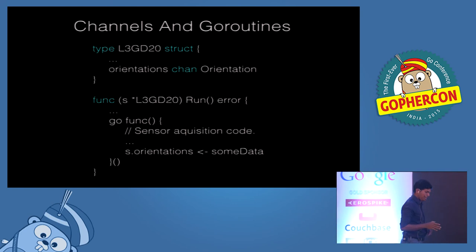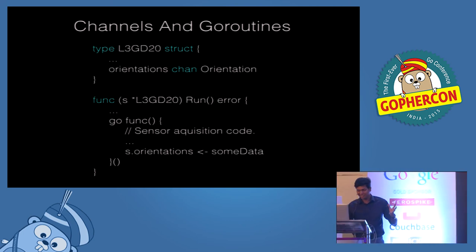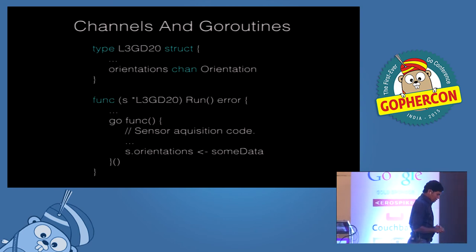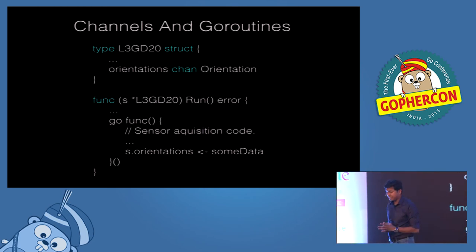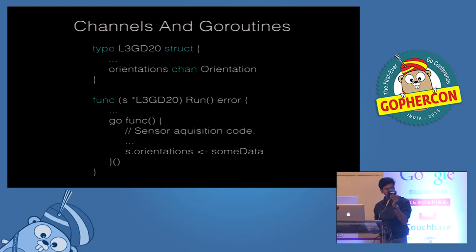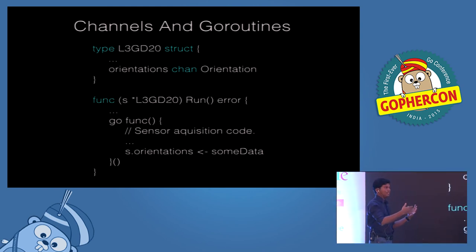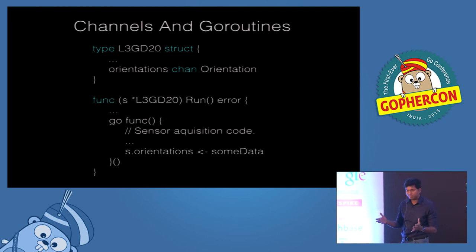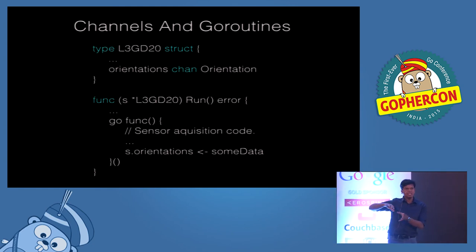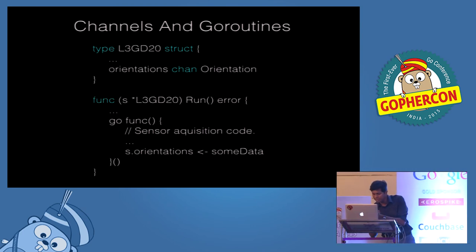Now, in any Go talk about features, it would be very incomplete if you don't talk about channels and goroutines. How did we use channels and goroutines? To talk about this, I'll talk about sensors. A sensor basically takes samples of data from its surroundings — like a temperature sensor tries to sense the ambient temperature and then convert it into digital data that a computer can read. That's as simple as it gets.